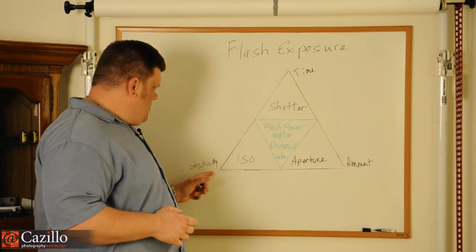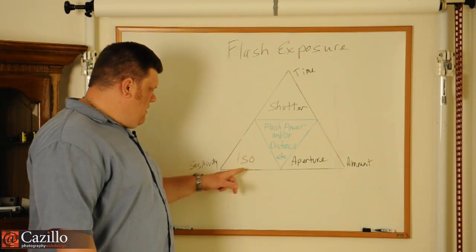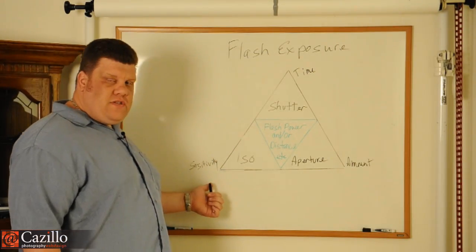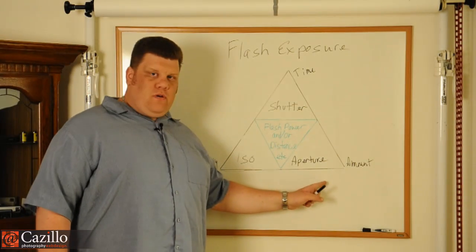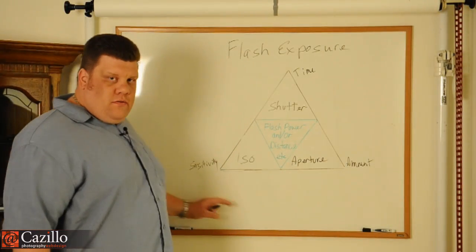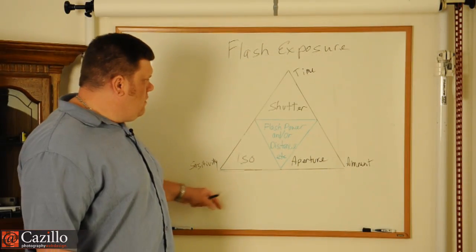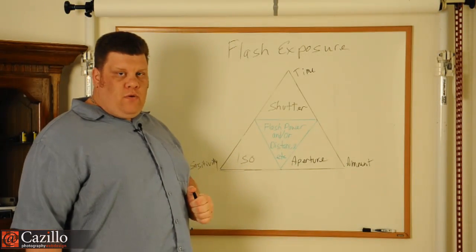Now, your sensitivity, a little review. ISO is the sensitivity of the sensor or of the film that you're using. Aperture, or f-stop, is the amount of light that you're letting in to that sensor. And then your shutter speed is the amount of time that you're exposing it.